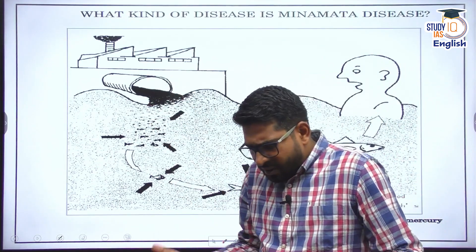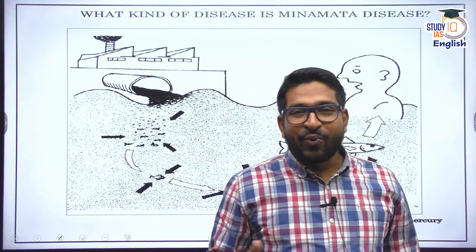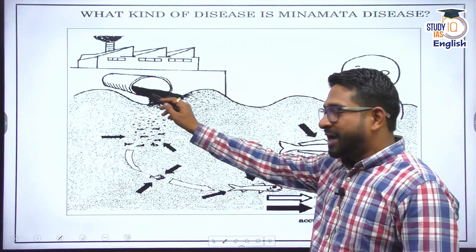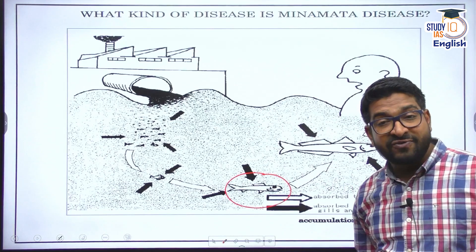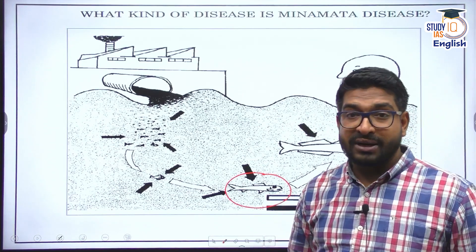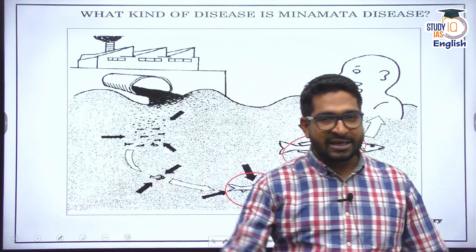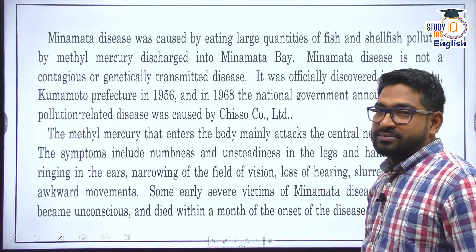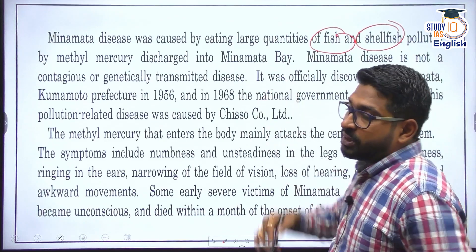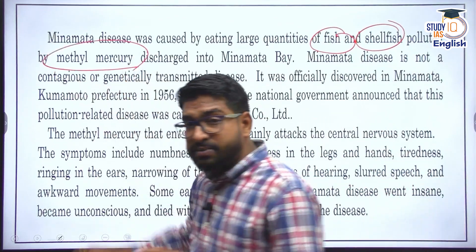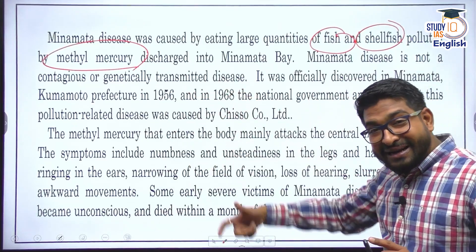This methylmercury entered the waters and then entered the food chain through fish and shellfishes — through the gills themselves. When these fish were caught and consumed by humans, methylmercury entered the human food chain as well. So the problem started. Minamata disease began because of consumption of large quantities of fish and shellfish polluted by methylmercury. Please remember, methylmercury is very dangerous, whereas ethylmercury is not comparatively as dangerous.